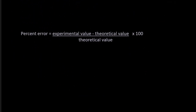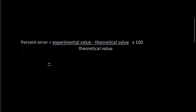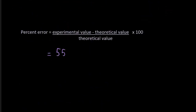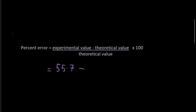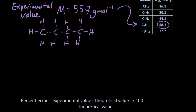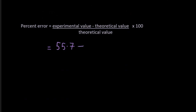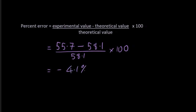You can do this as an absolute value - in IB they're not that concerned about the sign. Putting in my experimental and theoretical values gives me a percent error of 4.1%. Not too shabby - that's all right.